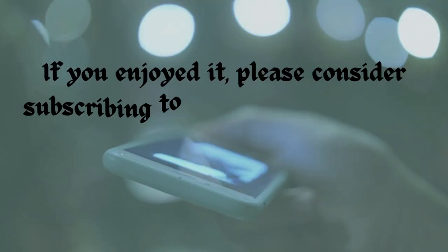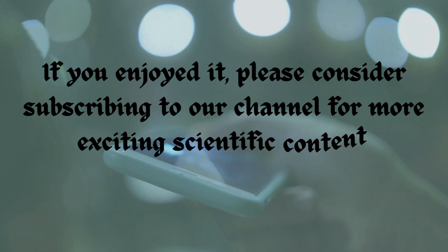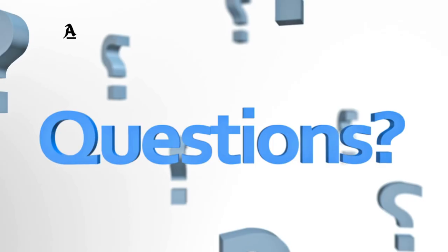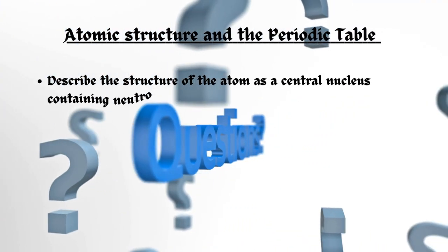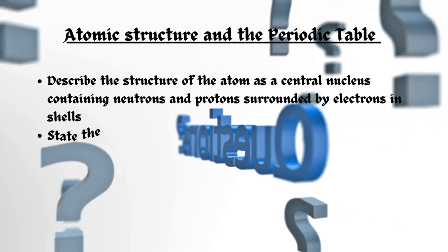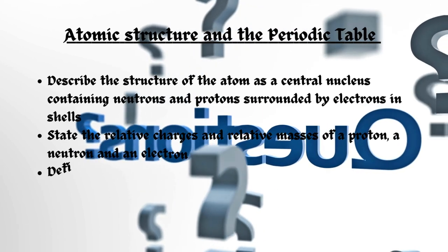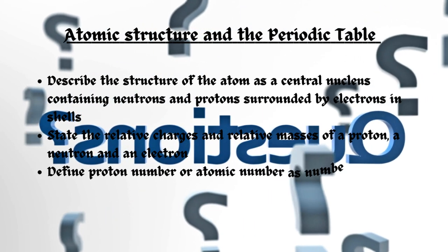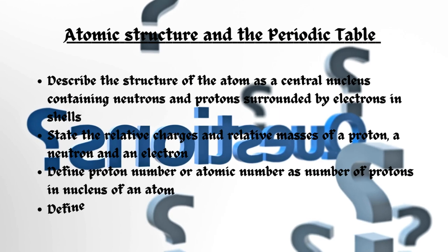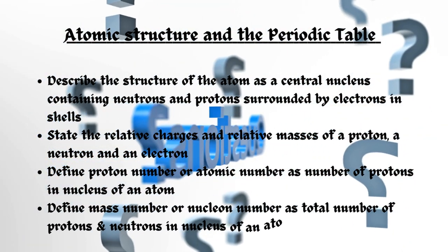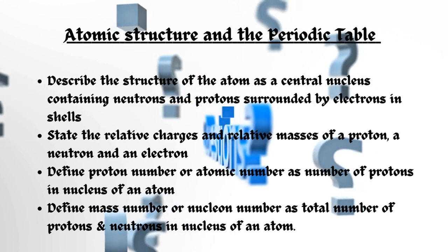We hope you found this video informative and insightful. If you enjoyed it, please consider subscribing to our channel for more exciting scientific content. Thanks for watching. Coming up next: Atomic Structure and the Periodic Table — describing the structure of the atom as a central nucleus containing neutrons and protons surrounded by electrons in shells, stating relative charges and masses of a proton and neutron, and defining proton number, mass number, and nucleon number.